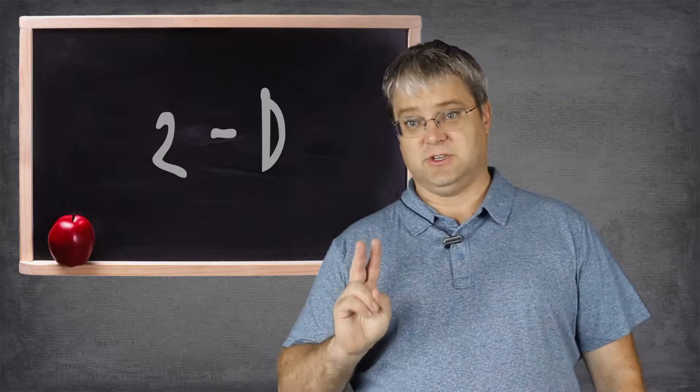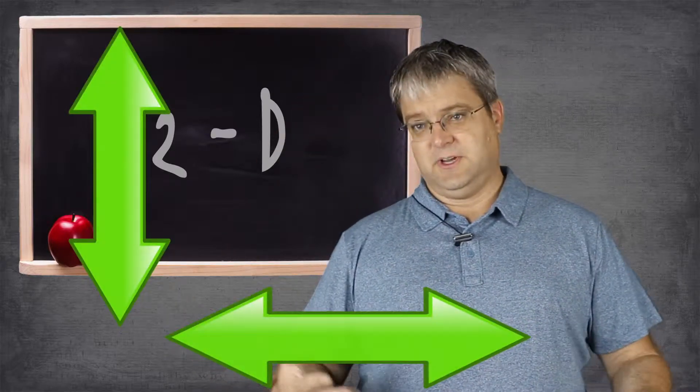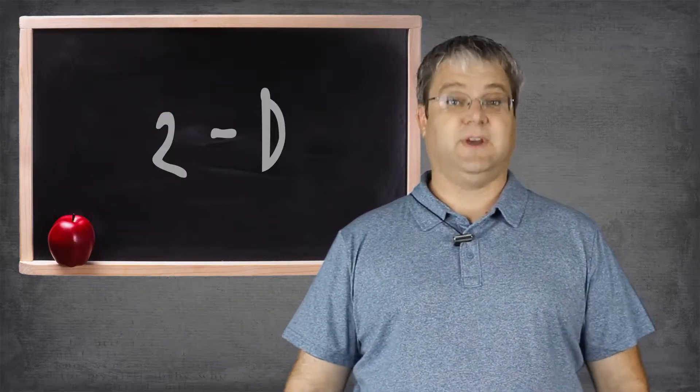2D means two dimensions, up and down, and left and right. This video is a 2D image, and it was created with a 2D editing program called After Effects by Adobe.